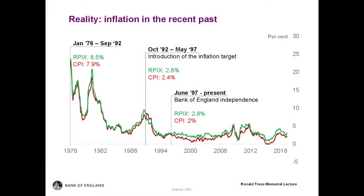Let me illustrate what happened since 1976. This graph shows the evolution of inflation measured as the CPI inflation index in red and RPIX — the retail price index excluding mortgage interest rate payments — in blue. Before the introduction of inflation targeting in 1992, inflation was very volatile and on average very high. The average CPI inflation rate during this period was almost 8%, and the RPIX was above 8%. The introduction of inflation targeting brought down the inflation rate, and since 1997, the average has been brought down to 2% as measured by CPI.